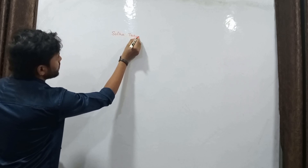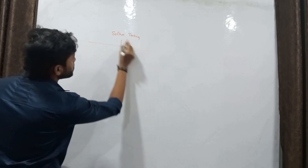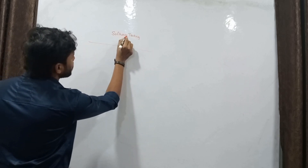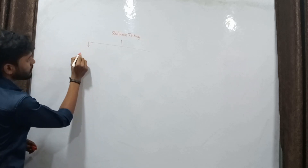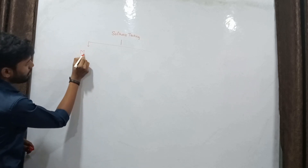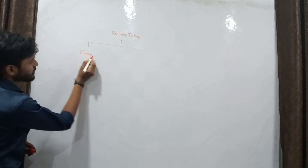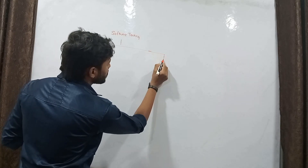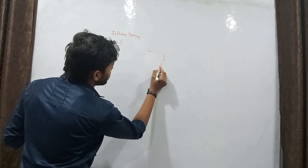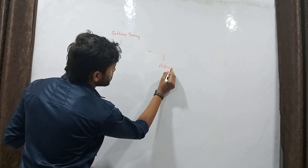Software testing is divided into two types: the first is manual testing, and the second one is automation testing.